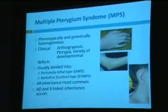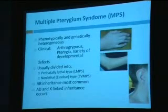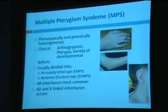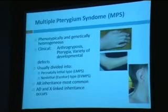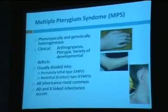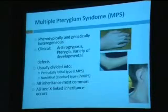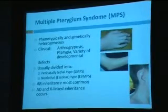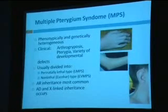Multiple pterygium syndrome is classically divided into two types: a pre- or perinatal lethal form known as lethal multiple pterygium syndrome, and a non-lethal form known as Escobar multiple pterygium syndrome. The various types can be inherited in different ways including dominant and X-linked, but the majority are inherited in an autosomal recessive manner.